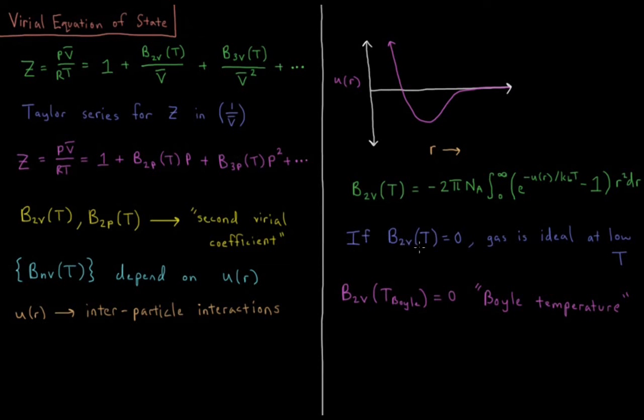So if the second virial coefficient of the gas is 0 at a given temperature, the gas is ideal for low temperatures. It's only non-ideal once p squared starts to become non-zero. So the temperature at which the second virial coefficient is equal to zero is called the Boyle temperature of the gas. That's a temperature at which the gas is ideal for an extended period of pressure and or molar volume.